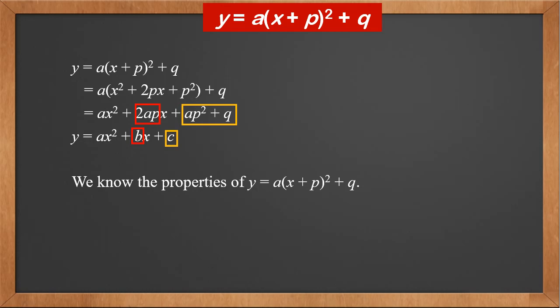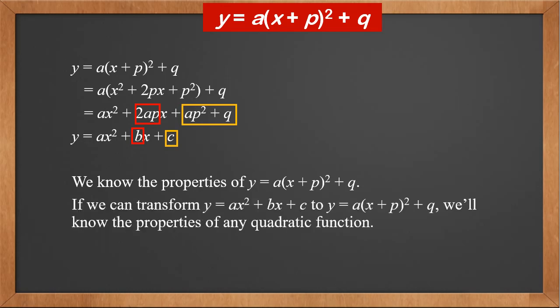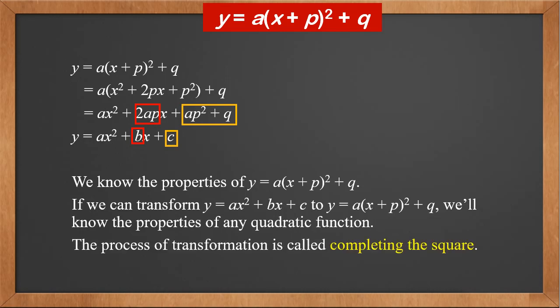We already knew the properties of y = a(x + p)² + q. If we can transform y = ax² + bx + c into y = a(x + p)² + q, we will know the properties of any quadratic function. The process of this transformation is called completing the square.